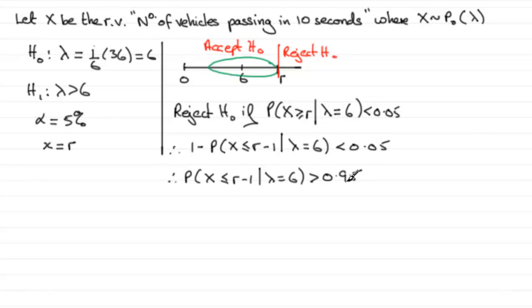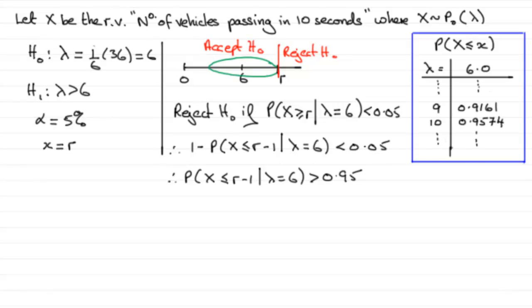Now we need to look in some tables, the cumulative Poisson distribution tables. And I've got an extract of that table. We take lambda, we look under the 6, and we're looking for a value that is just greater than 0.95. And when we look down this column here, we see that that value is 0.9574. And this column here would represent your X value, so X would be 10.